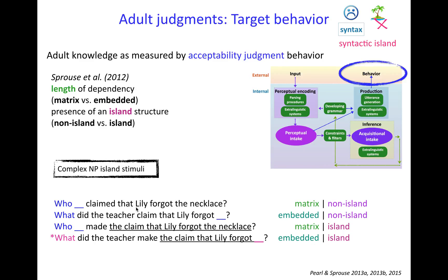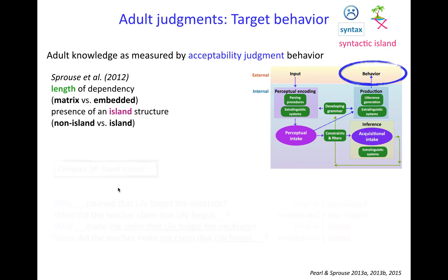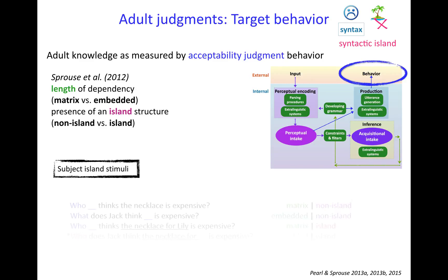Those are your four stimuli that come from varying your two factors, for the structure known as complex NP. You can actually do this for a bunch of other island structures, which is what Sprouse and colleagues did in 2012.